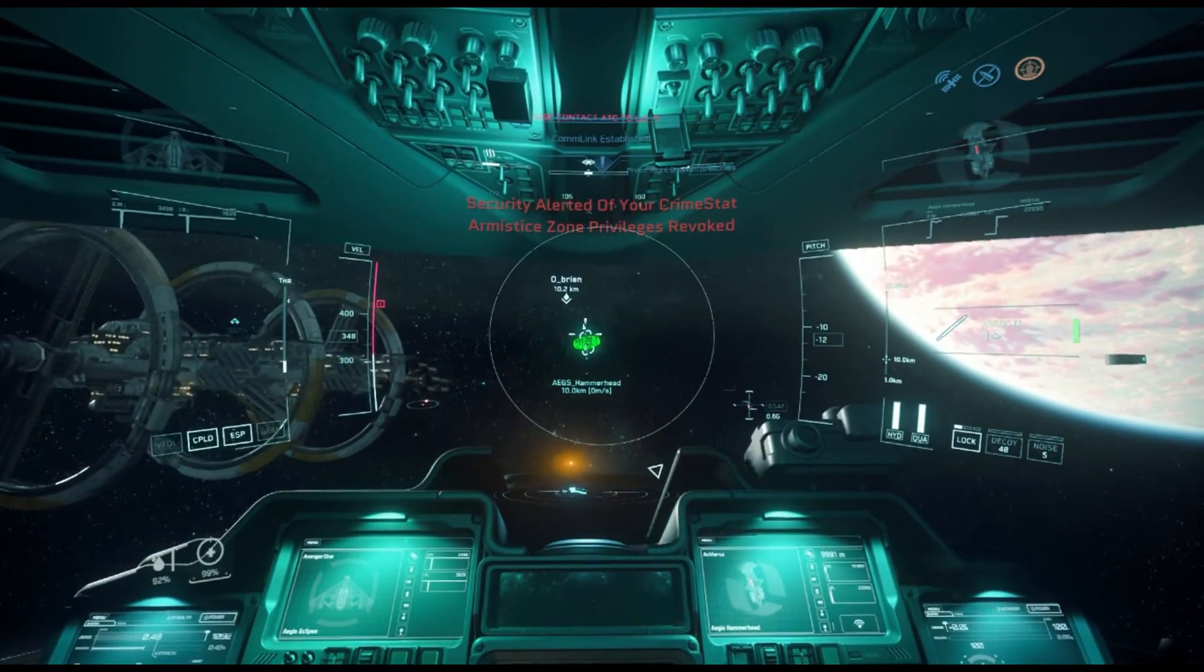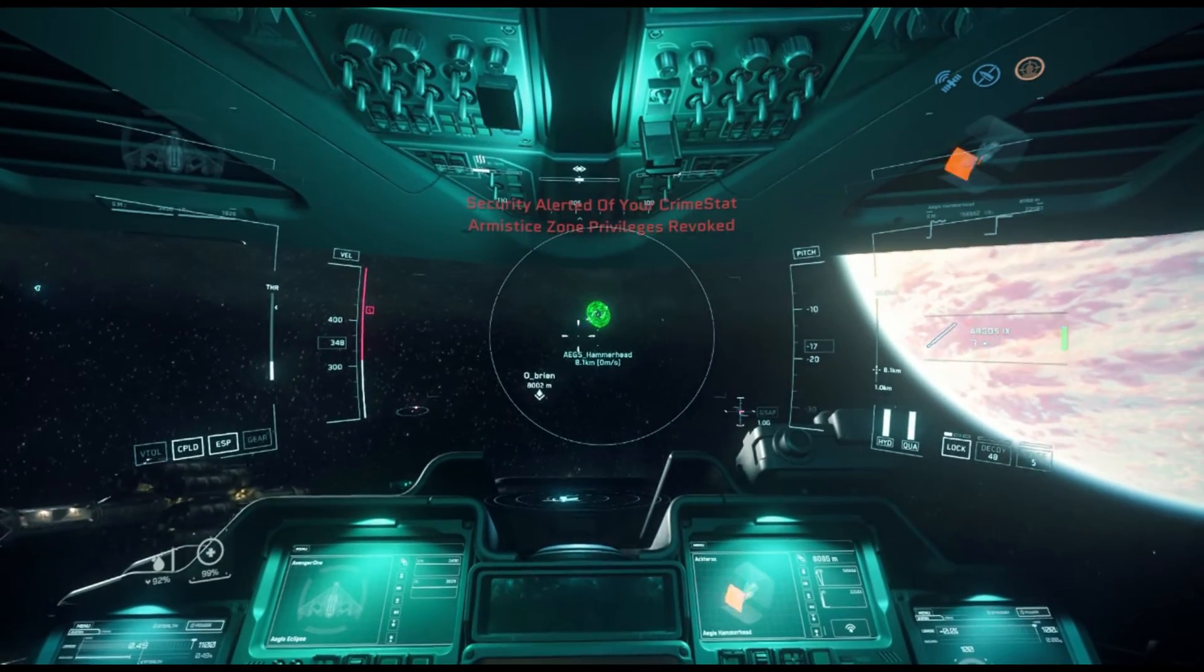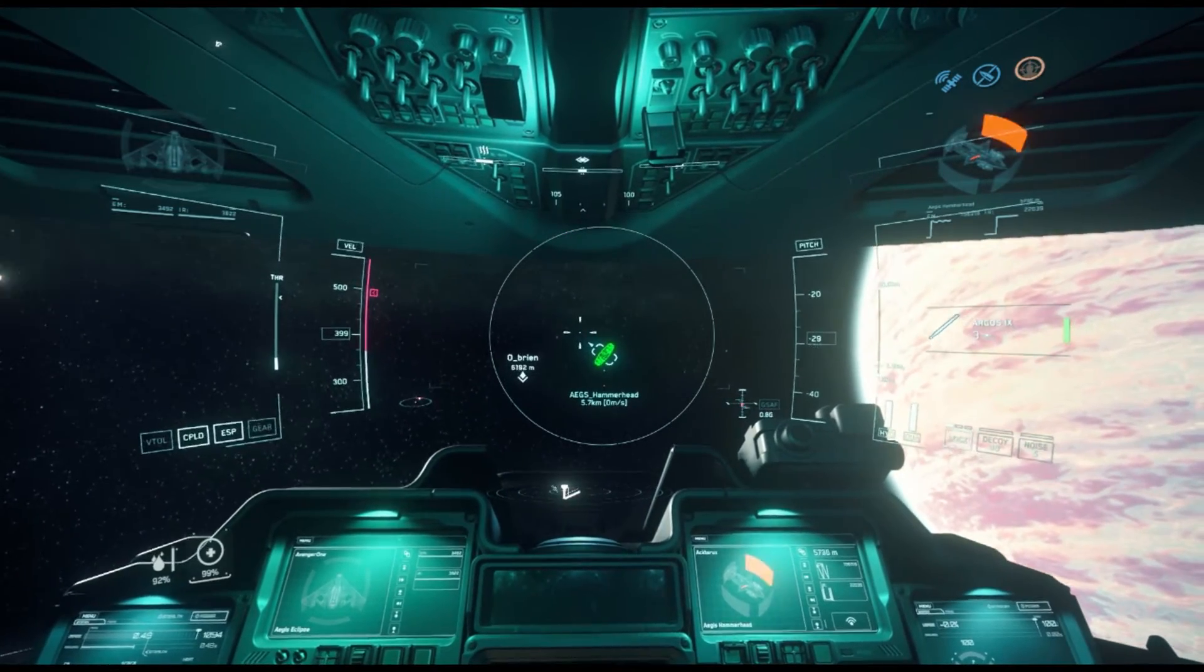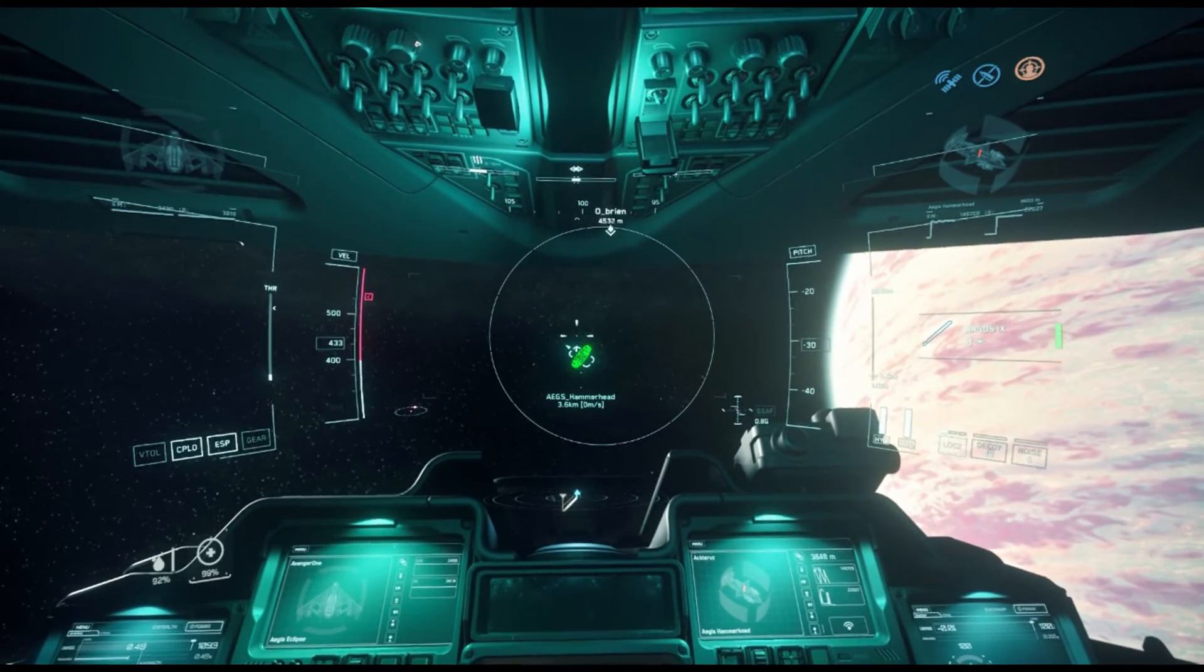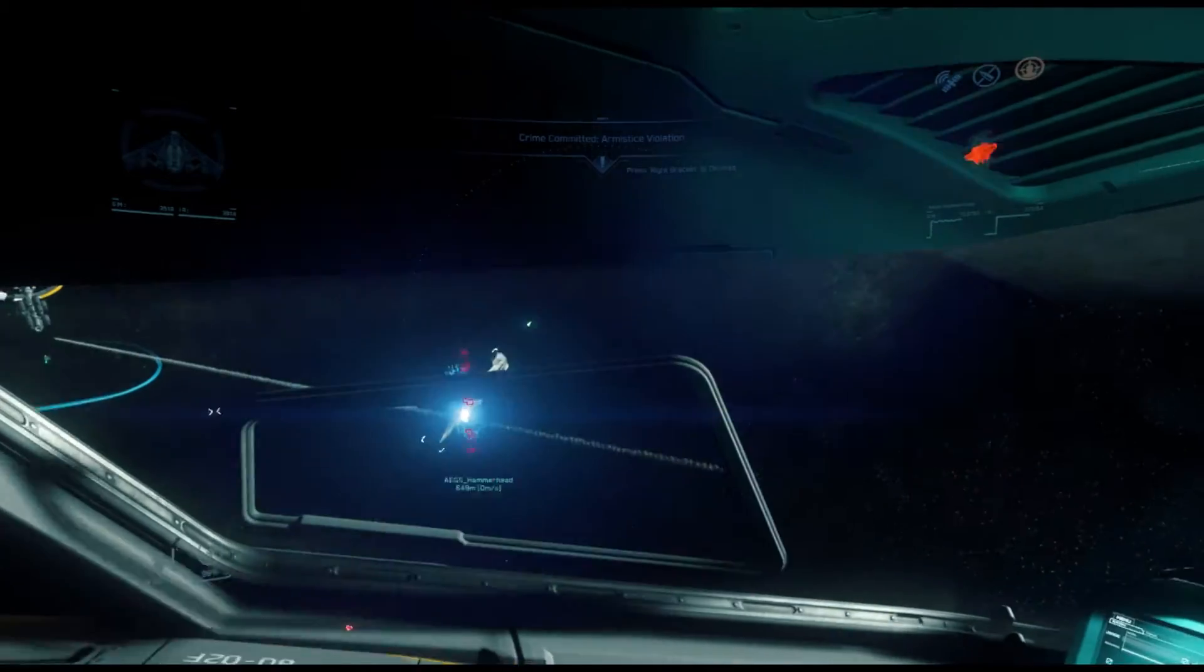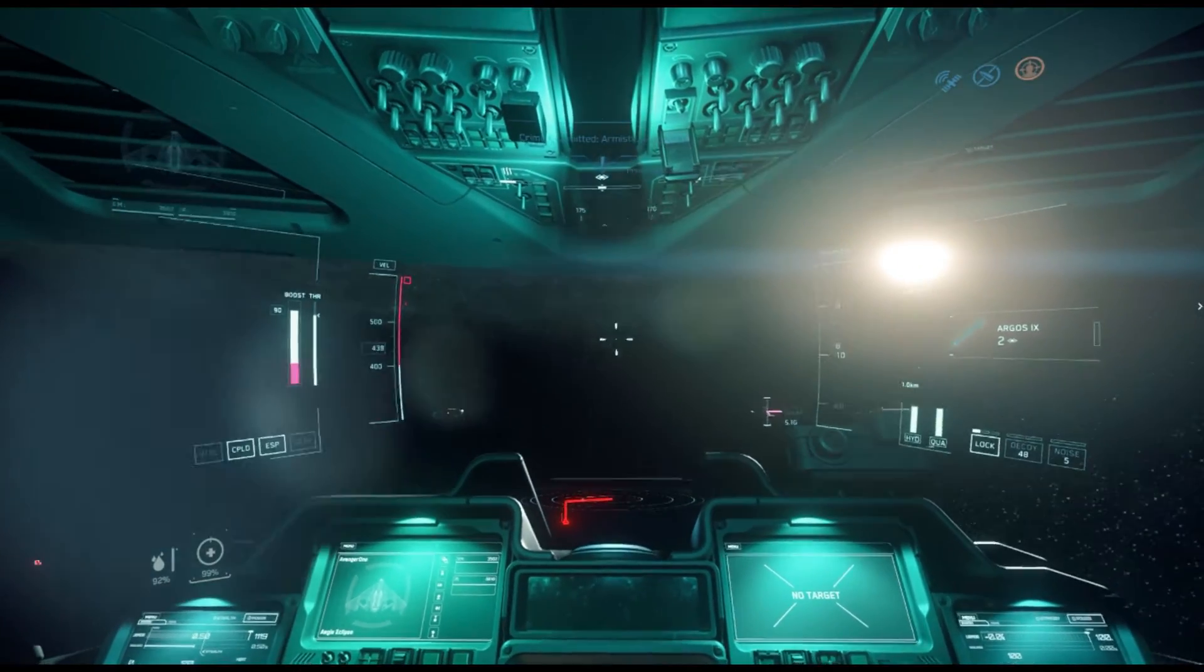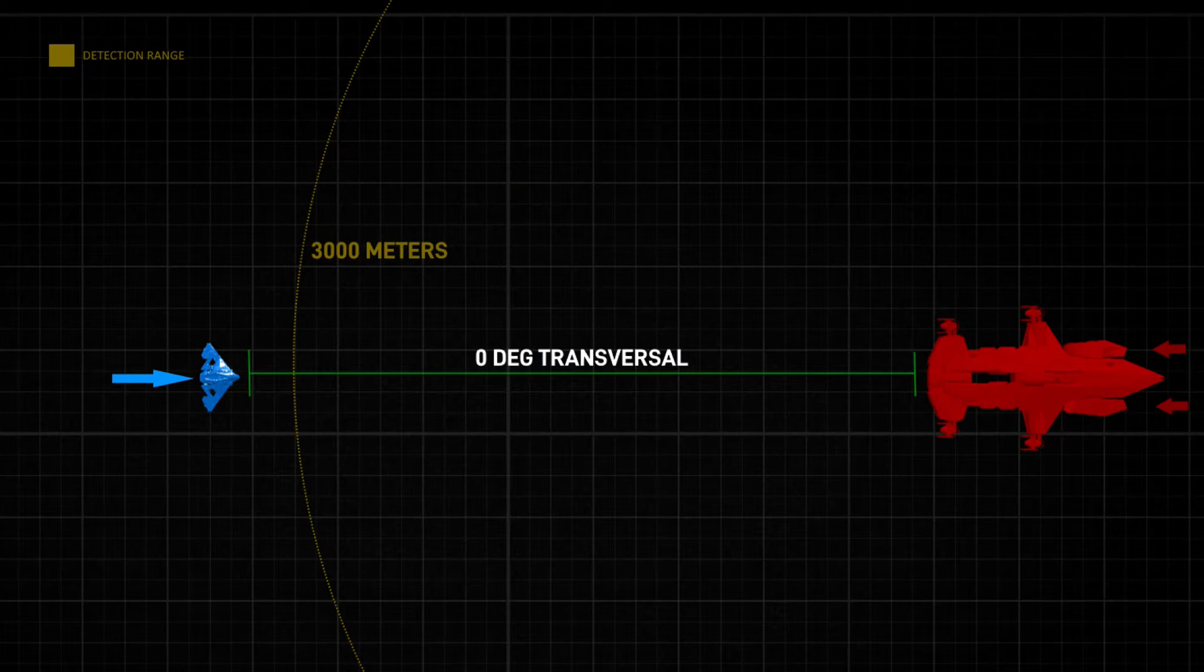So today we're going to talk about one of my absolute favorite things to do in Star Citizen, especially coming from my background as the originator and founder of Bomber's Bar from Eve Online: stealth torpedo bombing in Star Citizen. We need to understand how it works, how to execute on it as we can see here, how to fire and get results with Hammerhead kills. That was a player Hammerhead. We need to understand something very important, and that's called transversal.